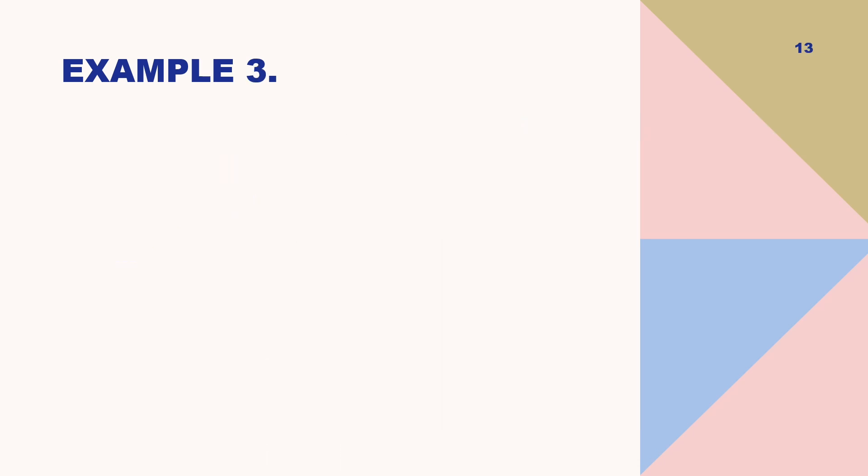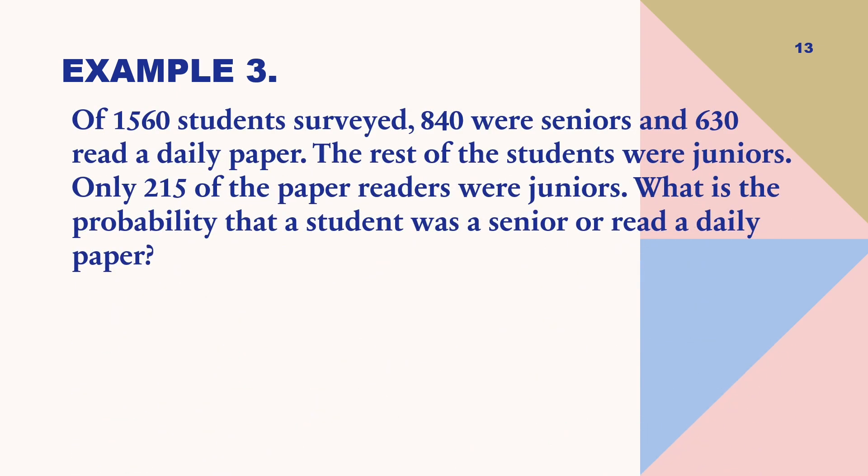So, let us proceed to example number three. Of 1,560 students surveyed, 840 were seniors and 630 read a daily paper. The rest of the students were juniors. Only 215 of the paper readers were juniors. What is the probability that a student was a senior or read a daily paper? So, to solve this problem,